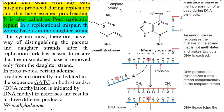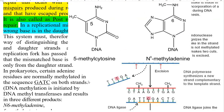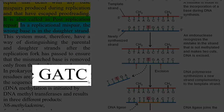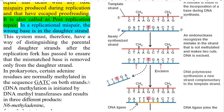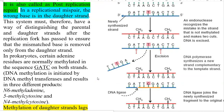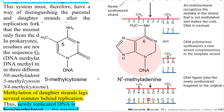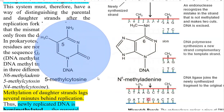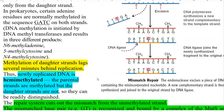In prokaryotes, certain adenine residues are normally methylated, especially in the sequence GATC on both strands. DNA methylation is usually initiated by special methyl transferase enzymes, resulting in the methylation of certain bases such as adenine. Adenine is methylated as N6-methyladenine, and cytosine may be methylated as 5-methylcytosine or N4-methylcytosine. During the process of replication, the methylation of the daughter strand lags several minutes behind the replication process.